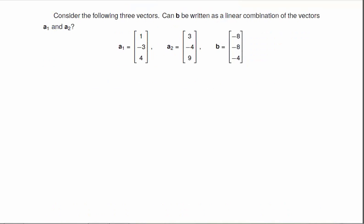So here I have some vectors, and I want to know, can b be written as a linear combination of the vectors a1 and a2? So what I'm really trying to find here is, do these numbers exist such that x1a1 plus x2a2 is equal to b?